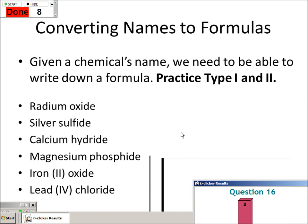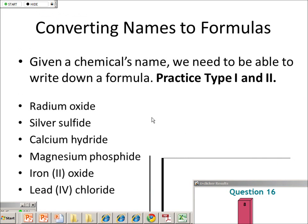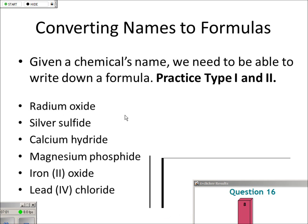Given a chemical's name, we need to be able to write down a formula — it works both ways. I can give you a formula and ask for the name, and if it's a good enough name, you should be able to give me the formula. So, radium oxide — I don't know much about radium, but I can look at the periodic table and that'll help me out.